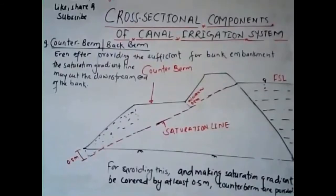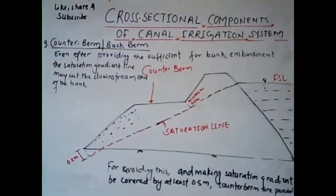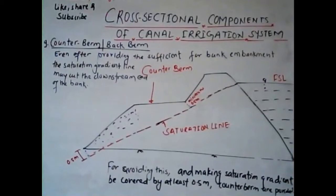The ninth cross-sectional element is the counter berm, also known as the back berm. Even after providing a sufficient bank embankment section, the saturation gradient line may sometimes cut the downstream end of the bank. In such a case, the saturation line can be kept covered by at least 0.5 meters with the help of a counter berm, keeping the saturation line at least 0.5 meters away from the toe of the downstream bank to prevent bank erosion.